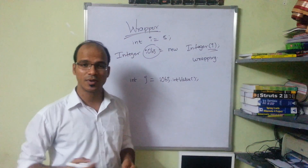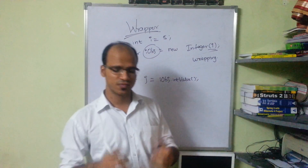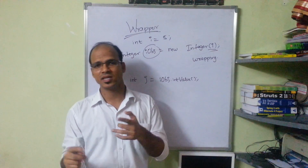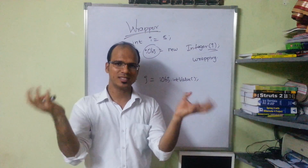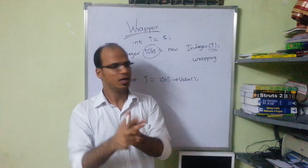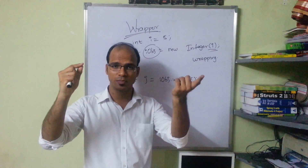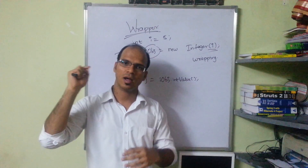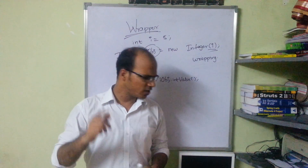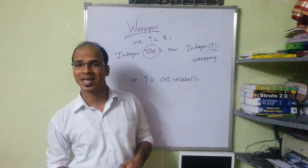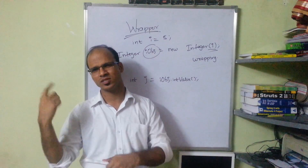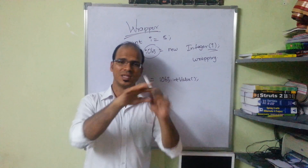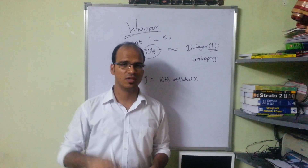So this is how you work with wrapper classes. In wrapper classes we have lots of classes — Integer, Float, Double, Byte, and many more. Converting a variable into an object is wrapping; taking the value out of the object is unwrapping. This is what wrapper classes are. In fact, you have the same concept in C# as boxing and auto-boxing. If you have any doubts, please comment and please subscribe for further videos. Thank you so much.